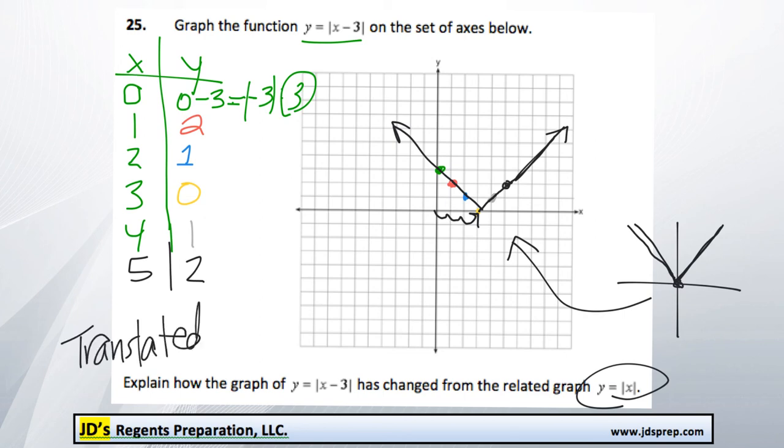And that's really all the explanation you need, that we've translated 3 units to the right. Yeah, and that's all you need to do for this question. Thanks for visiting JD's Regents Preparation.